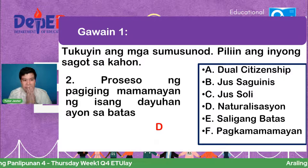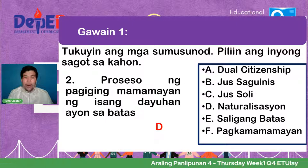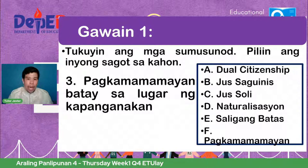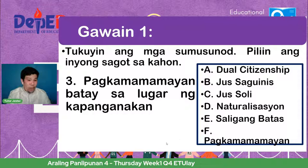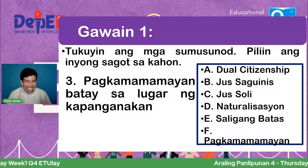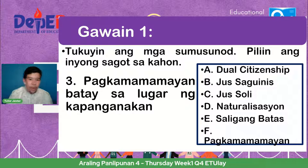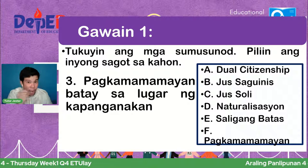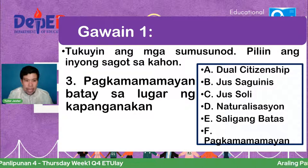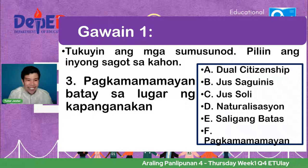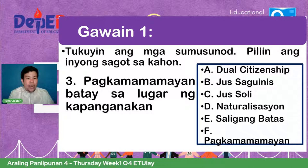Number three: pagkamamamayan batay sa lugar ng kapanganakan. Ano ang kasagutan? Ayon kina Tutor J, Tutor RJ, Ayesha, at Martin — letter C. Ang tamang sagot ay letter C — jus soli. Very good!